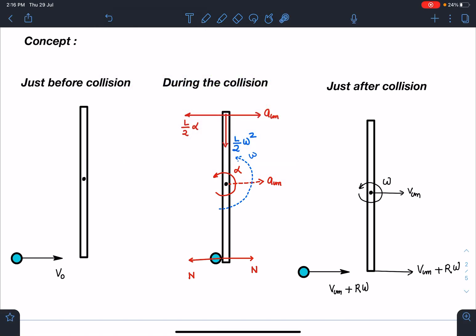Now here you can see this point A on the rod will have, due to translation ACM, and due to rotation it will have l by 2 alpha during the collision. Whatever omega it is having, it is slightly increasing from zero to some omega naught finally just after collision. So here l by 2 omega squared will be towards the center of the circle.